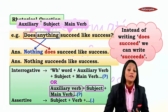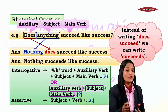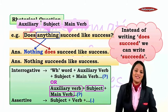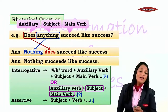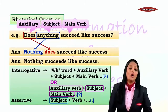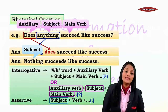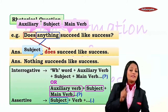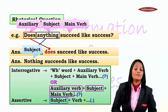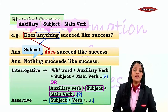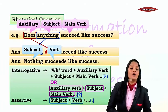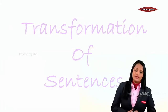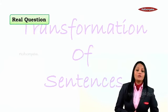We have changed from interrogative to assertive — changed the structure — and remember, we make it negative to affirmative and vice versa whenever it is a rhetorical question. Here the subject is 'nothing' and the verb is 'succeeds,' and of course the rest of it.